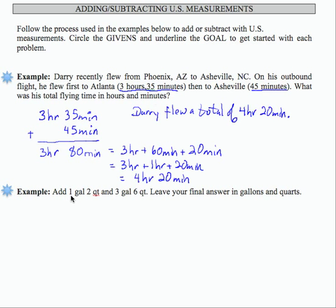In our next problem we're asked to add one gallon two quarts to three gallons and six quarts. So let's write that again vertically. It says leave your final answer in gallons and quarts. So let's see how that's going to work.